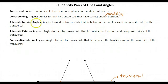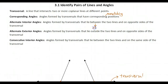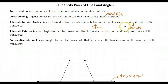Alternate interior angles are the angles that lie between the two lines. Between means interior, inside, and on opposite sides of the transversal. Opposite means alternating. Alternating means switching — left, right, above, below.